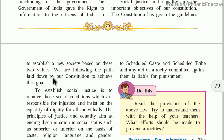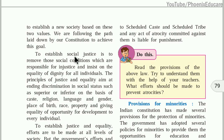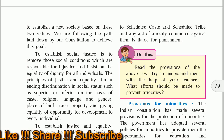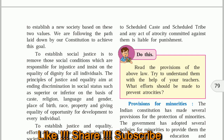We are following the path laid down by our constitution to achieve this goal. To establish social justice is to remove those social conditions which are responsible for injustice, and insist on equality and dignity of all citizens. If society makes bad practices that do not treat everybody as equal — there is a caste system in our society that places some people in higher positions and some in lower positions, and those in lower positions do not get equal opportunities. Social justice means removing those wrong things from society and ensuring everybody gets justice, equal opportunity, and equal status.